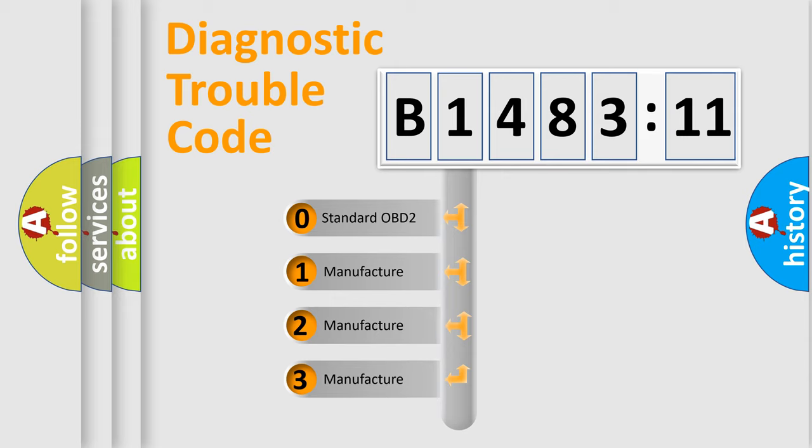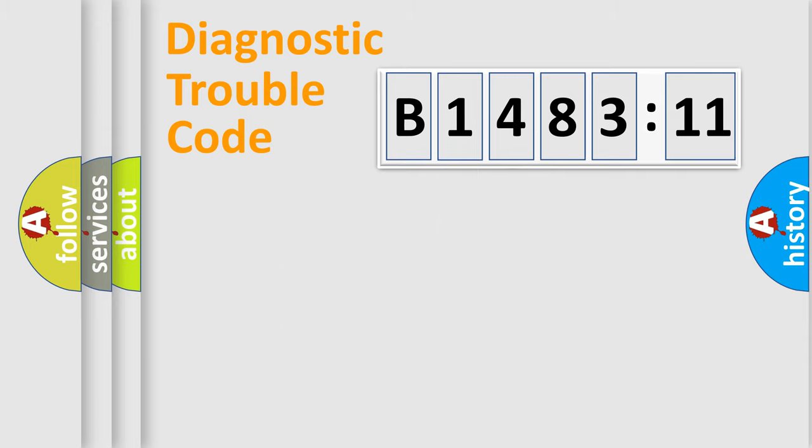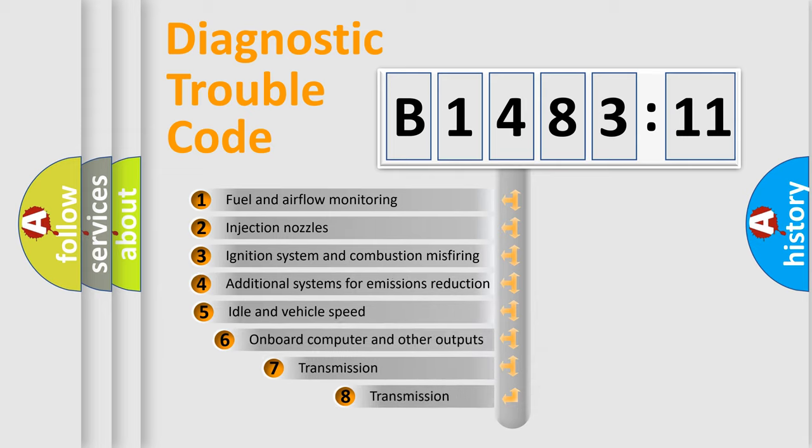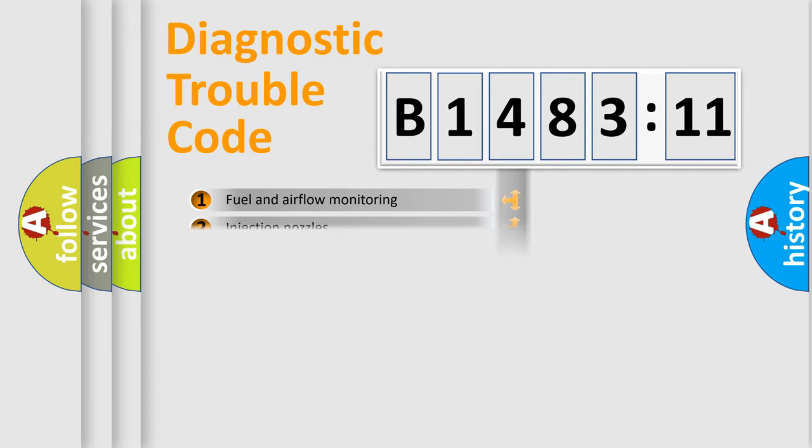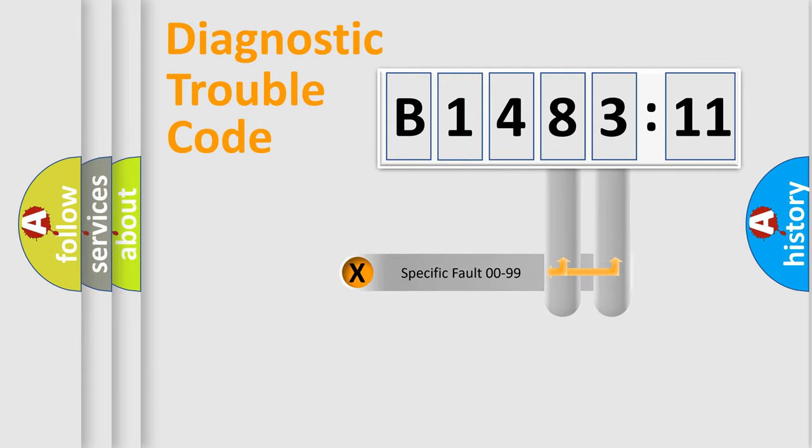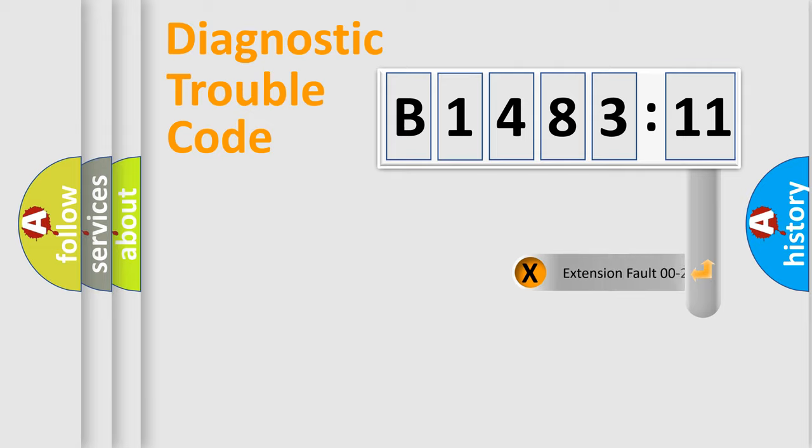If the second character is expressed as zero, it is a standardized error. In the case of numbers 1, 2, 3, it is a manufacturer-specific expression of the car error. The third character specifies a subset of errors. The distribution shown is valid only for the standardized DTC code. Only the last two characters define the specific fault of the group.